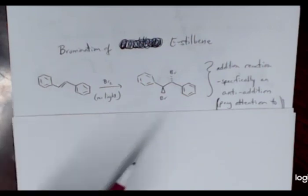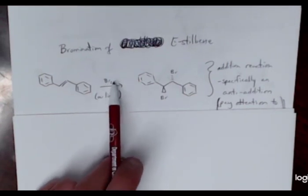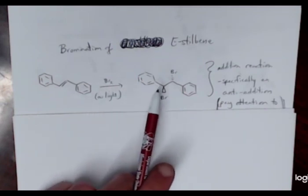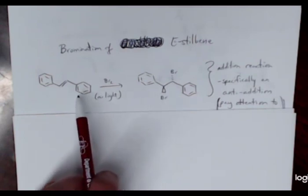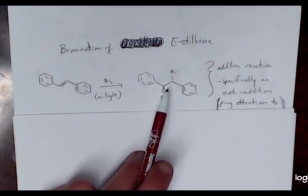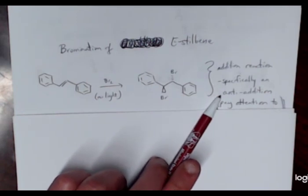And so by the addition of Br2, and I put here a note, no light. I don't want you guys to think that radicalization is taking place. There's no radicalization. So this is going to be just a straightforward addition reaction. Well, I say straightforward, but it is an addition reaction where we're going to add both bromines across that pi bond. And in particular, this addition reaction is specifically an anti addition reaction.